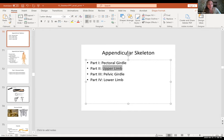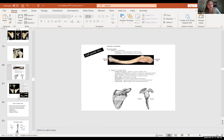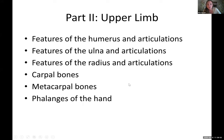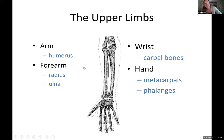We're going to start with the upper limb. Make sure you're at the part in your notes that says part two, upper limb — we're going to do the arm. The arm is made up of the upper arm, which is the humerus. The forearm is obviously your forearm, and then you have the wrist. We have eight carpal bones. Then you have the hand, and then you have the phalanges, which are the fingers.